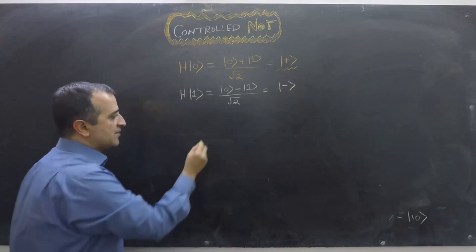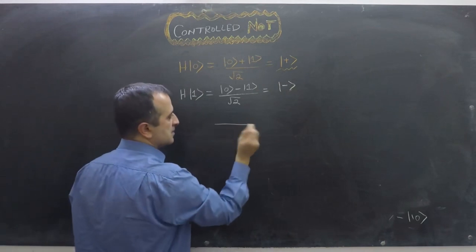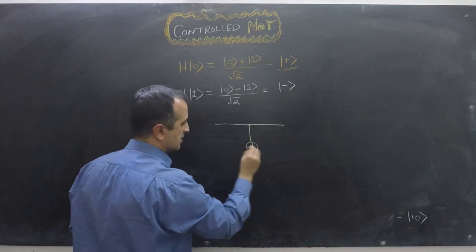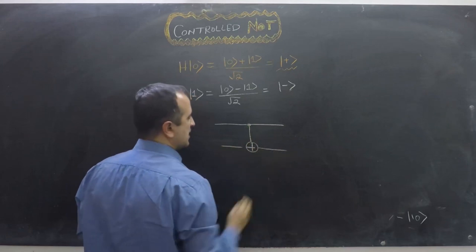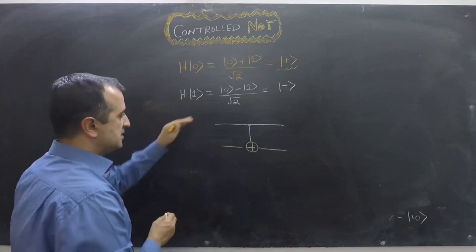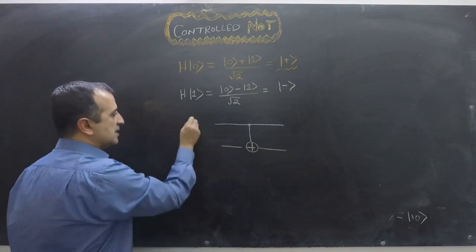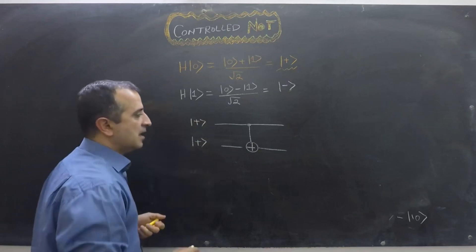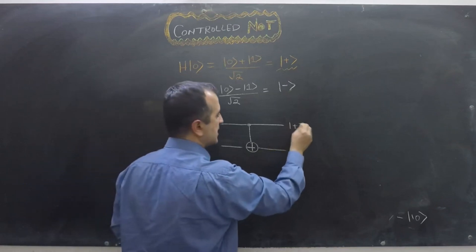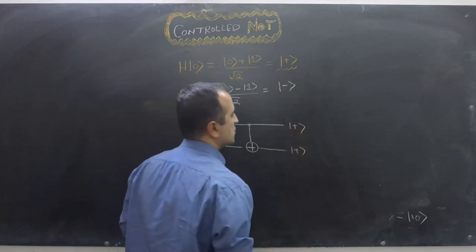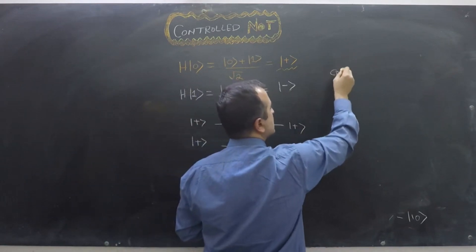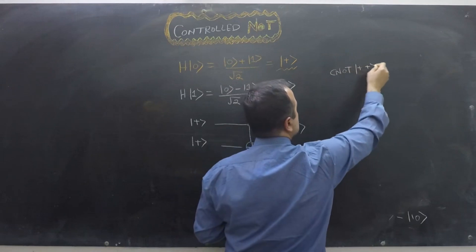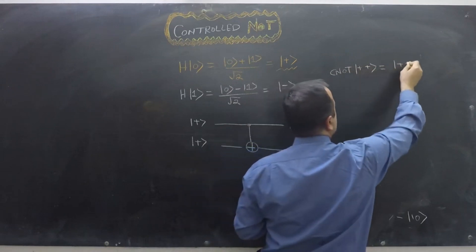Let's take a CNOT gate and, instead of giving it pure states, we give it |+⟩ and |+⟩ as inputs. Applying CNOT to |+⟩|+⟩ gives the result |+⟩|+⟩ — the state is unchanged.